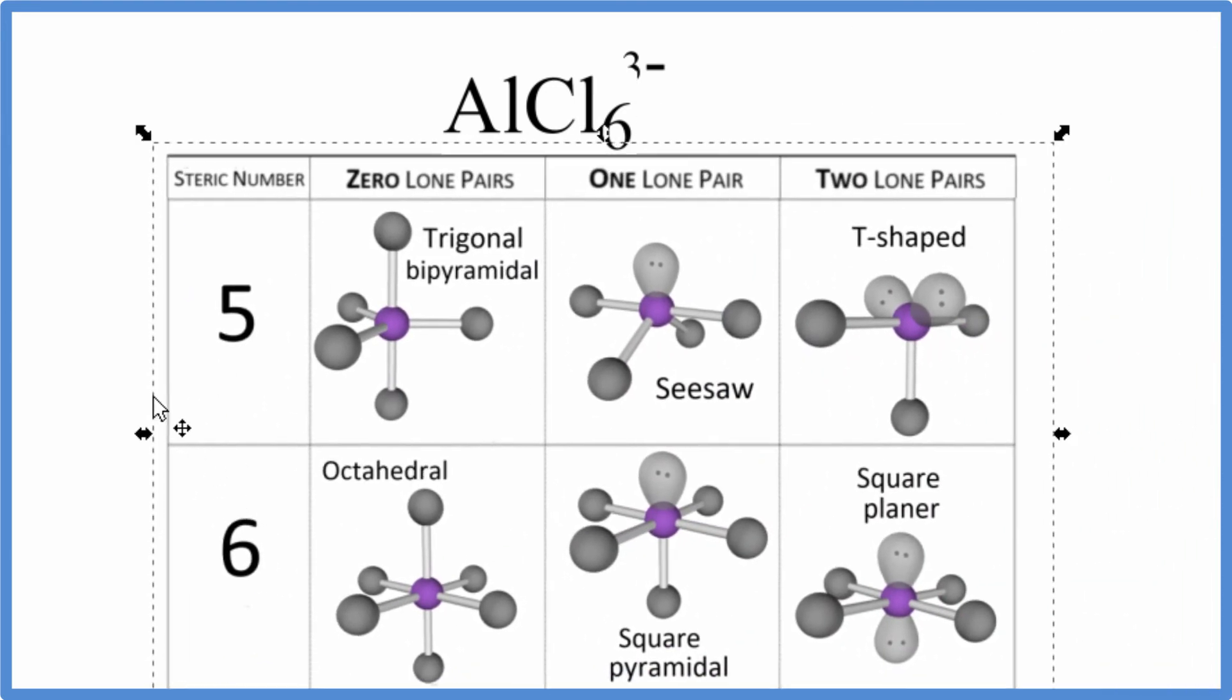we have the steric number, which we said is six. There's six things attached. There's no lone pairs. So if we have six things and zero lone pairs, we have an octahedral molecular geometry for AlCl6 3-.